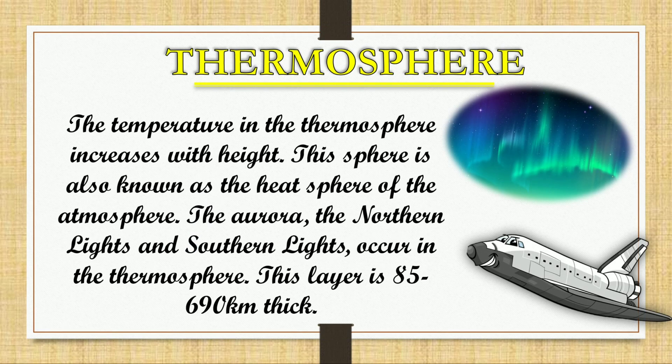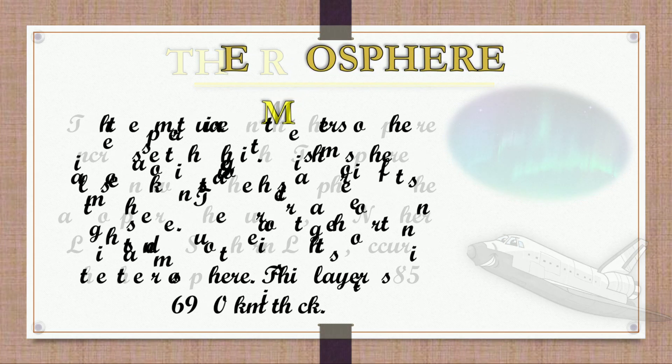Thermosphere: The temperature in the thermosphere increases with height. This sphere is also known as the heat sphere of the atmosphere. The aurora, the northern lights, and southern lights occur in the thermosphere. This layer is 85 to 690 kilometers thick.